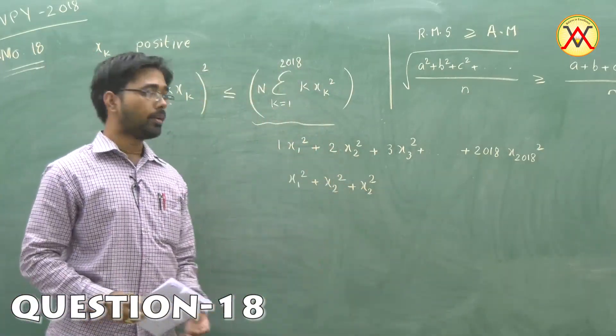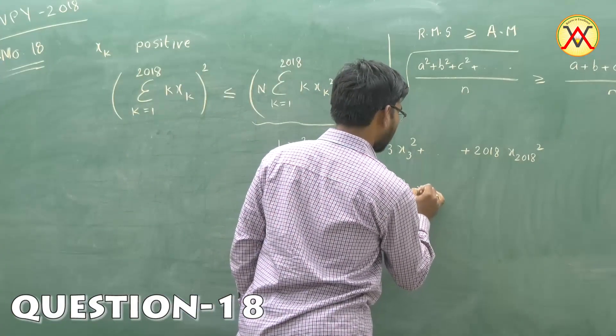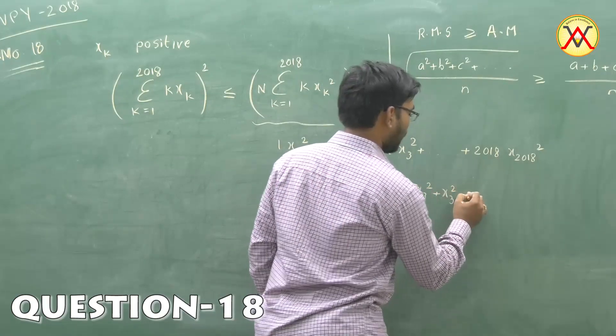Splitting the second term into 2 parts, the third term into 3 parts as x₃² + x₃² + x₃², and so on.